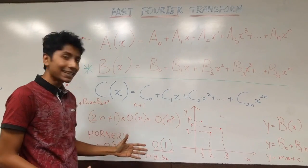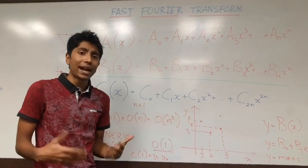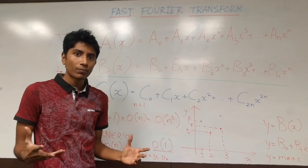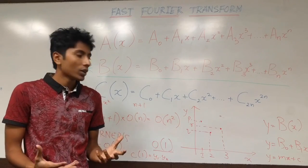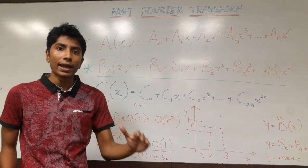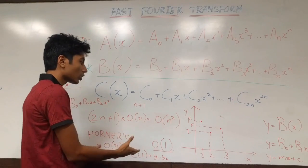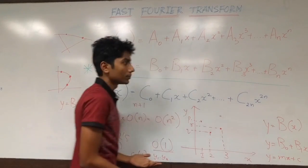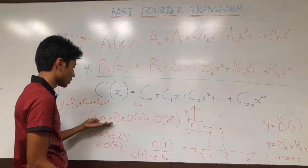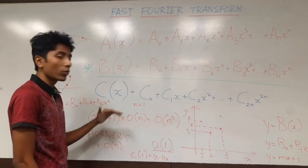We are talking about plotting n points for A and B. Plotting n points randomly gives O(n²) complexity, but if you can choose points in a smart way — points that have a particular relation between them — you can bring down the complexity. Each point evaluation costs O(n), and that's what's hurting us. We can't reduce the 2n+1 points needed, so the only thing we can reduce is this O(n) per-point cost — and we'll see how to do that.